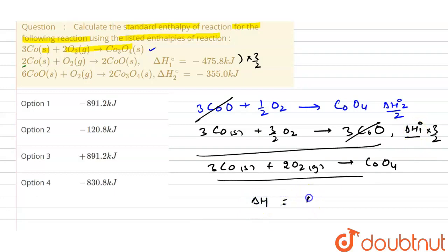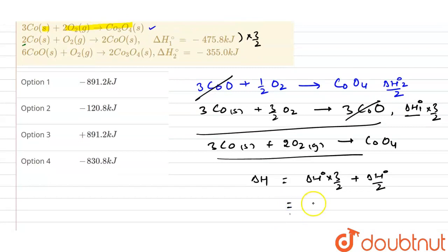For this reaction, the enthalpy will be the addition of these two values. That means ΔH° equals three by two times ΔH₁° plus one by two times ΔH₂°. Now put the values that are given here.